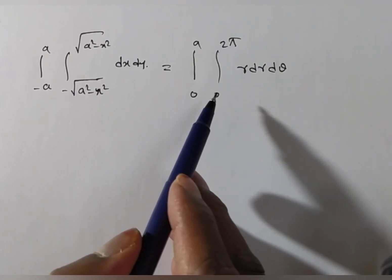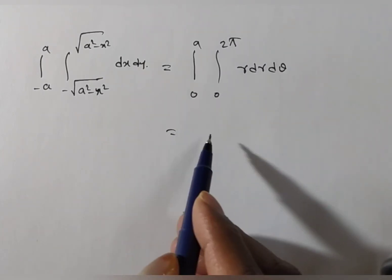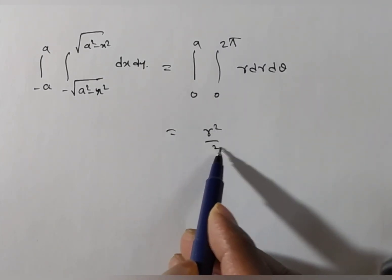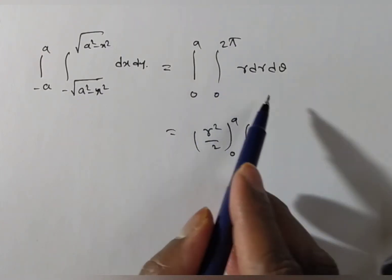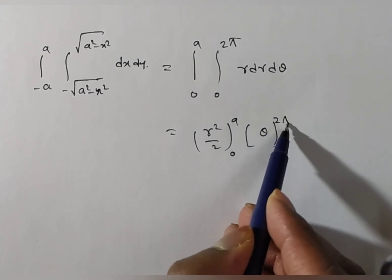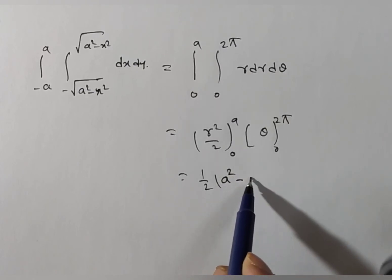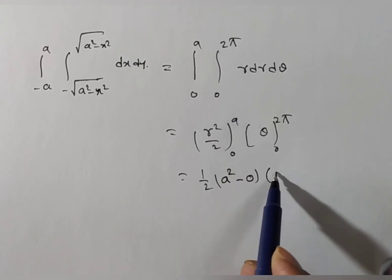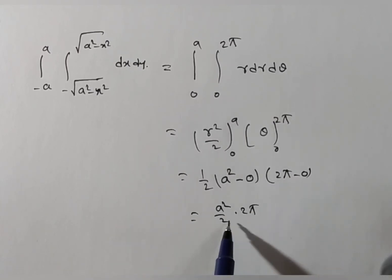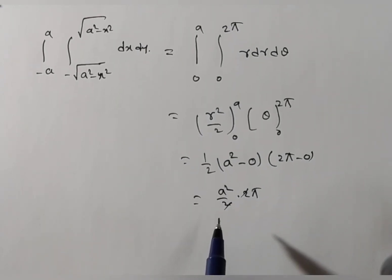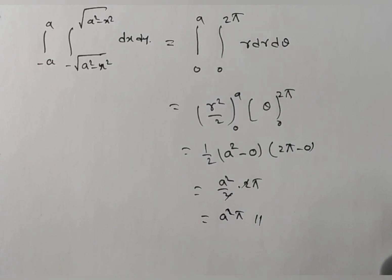The r integration gives r squared over 2, evaluated from 0 to a. The theta integration gives theta, evaluated from 0 to 2 pi, with coefficient 1. So we have one half times (a squared minus 0) times (2 pi minus 0), which equals a squared over 2 times 2 pi. The 2s cancel, giving the solution: a squared times pi.